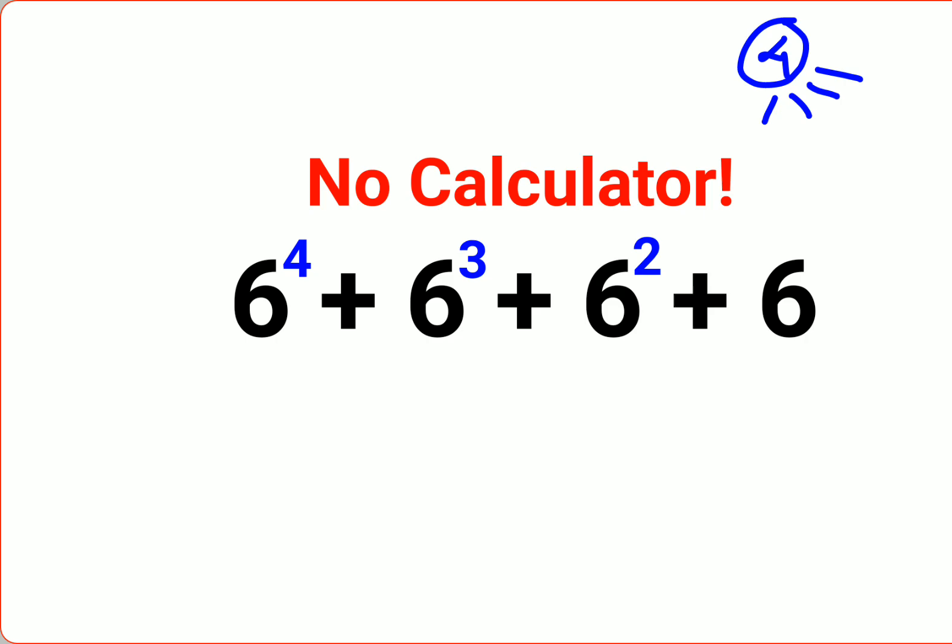Okay, for many such videos on a daily basis. So now, over here, when you have no calculator given, it's very easy to solve this if you take these two things separately. Now when I take these two things separately, what I can do is take 6³ common, and I'm left with just 6 plus 1.